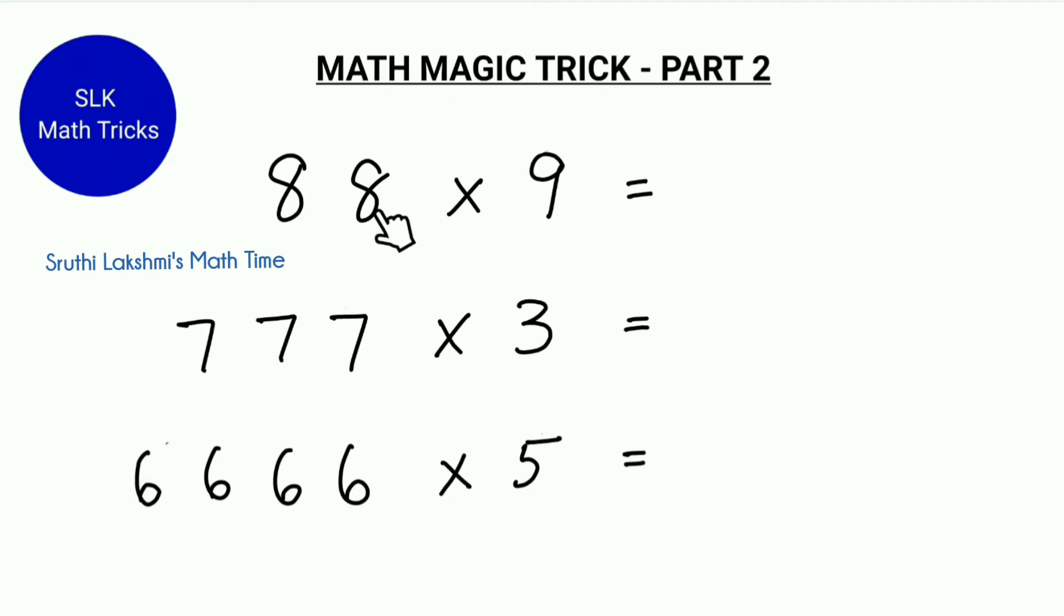Let's try 88 times 9. We first multiply 8 times 9 which is 72. We write 72 with a little gap in between. Then we see how many 8s are there before this 8. There is one 8. So we come to know that there will be one more number between these two numbers. So we add 7 plus 2 which gives us 9. So we write 9 in the space here. So 88 times 9 is 792.